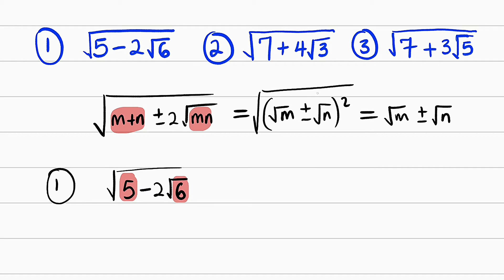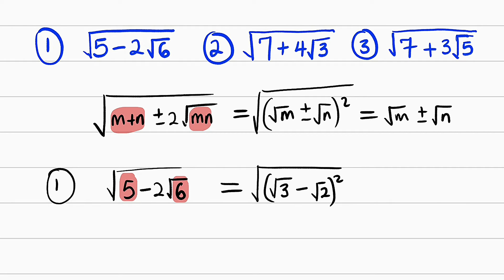The numbers are 3 and 2. Having known the numbers, we can now write our square root in this form. So this is equal to the square root of (root 3 minus root 2) all squared. From here, square root will cancel the square, and finally our answer is square root of 3 minus square root of 2. But if you write square root of 2 minus square root of 3, you have to take the absolute value, because square root of 3 is greater than square root of 2.